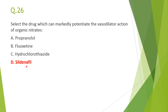Next: the drug that can markedly potentiate the vasodilator action of organic nitrates is D, sildenafil. Sildenafil is a phosphodiesterase 5 inhibitor used in pulmonary hypertension and erectile dysfunction. It increases cyclic GMP, causing vasodilatation, which adds to that caused by nitrates, markedly potentiating vasodilatation and fall in blood pressure. Therefore, nitrates and sildenafil should be avoided together.